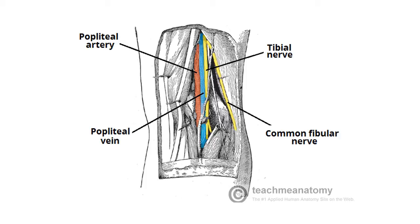The popliteal fossa acts as a conduit for neurovascular structures to enter and leave the leg. The popliteal artery, popliteal vein, tibial and common amphibular nerves all pass through the popliteal fossa. Whilst the artery, vein and tibial nerve pass straight down the middle, the common amphibular nerve runs along the lateral aspect of the fossa, following the tendon of the biceps femoris.